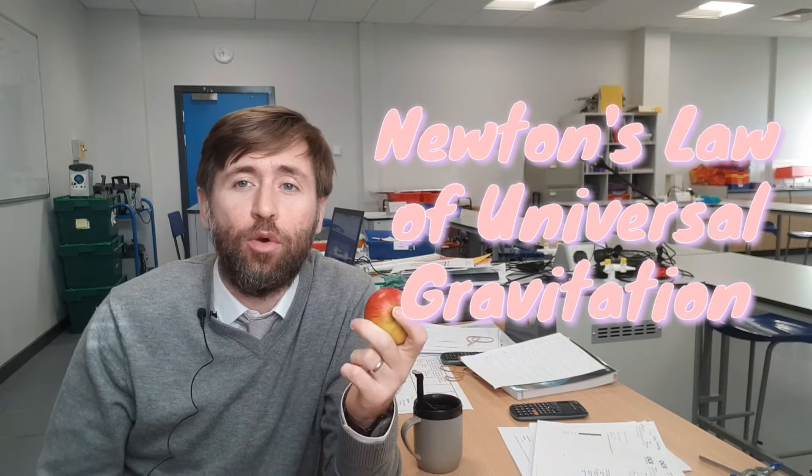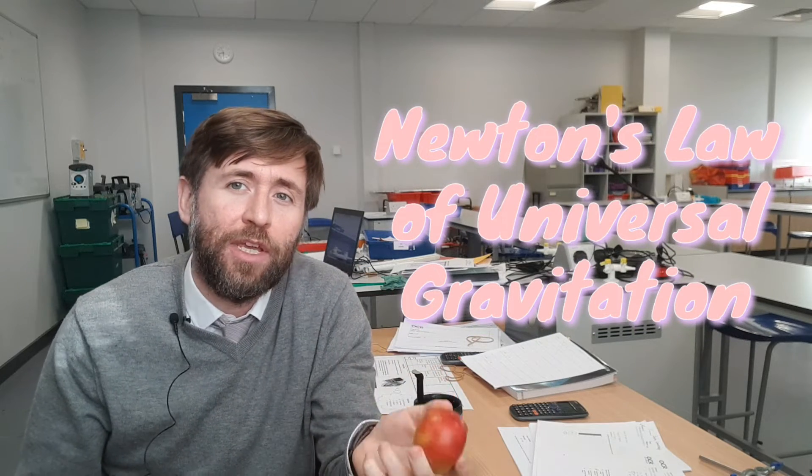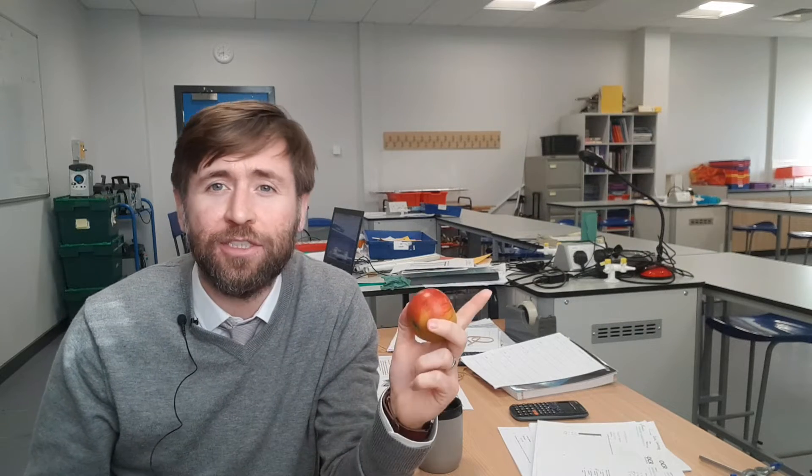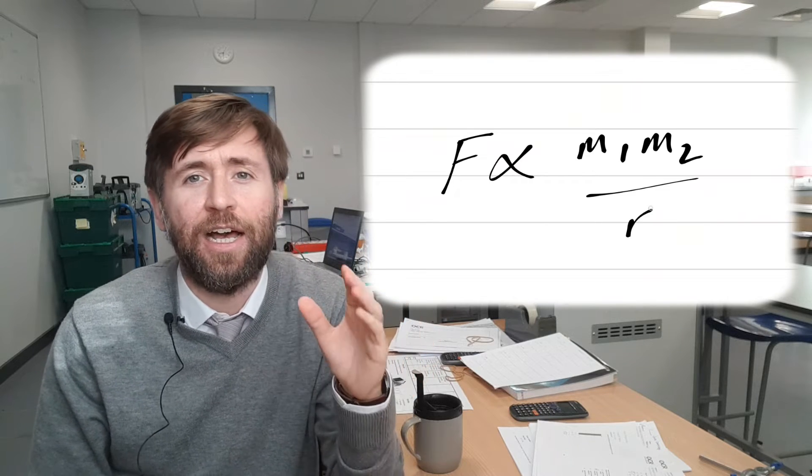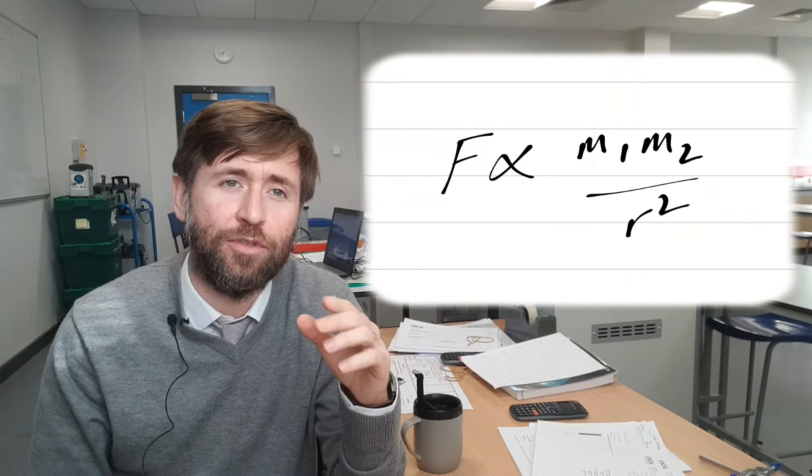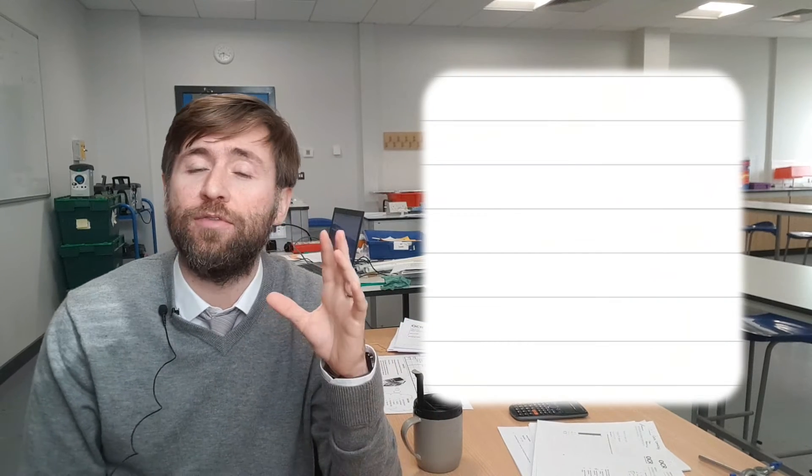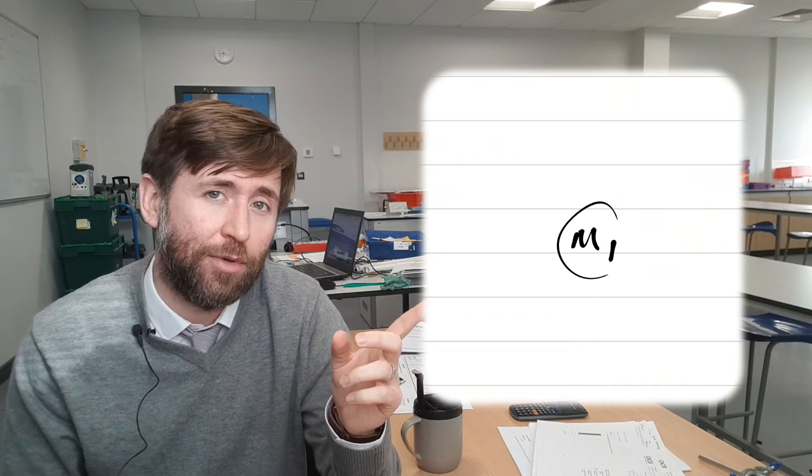So he called this his law of universal gravitation, the law of everything attracting everything else and being governed by this inverse square law where the force is proportional to the product of the masses and inversely proportional to the square of the distance between them. So it's an inverse square law and it follows very similar laws to any other radial field.